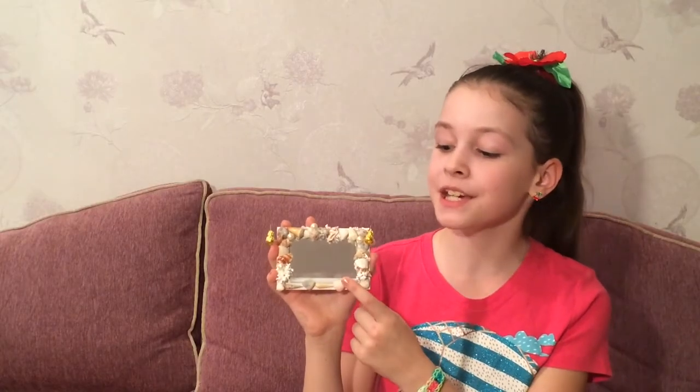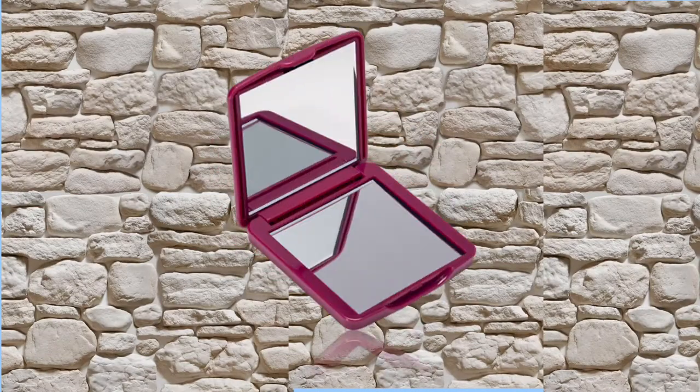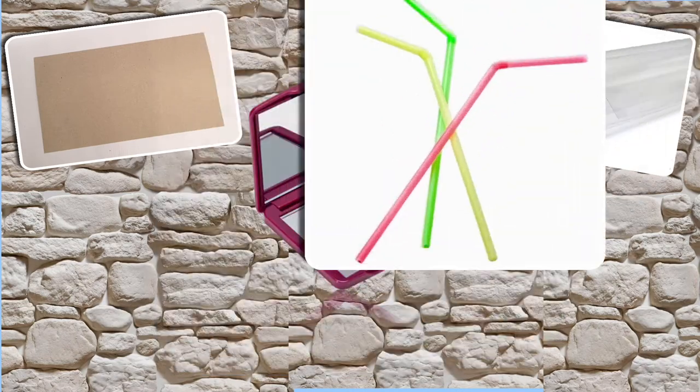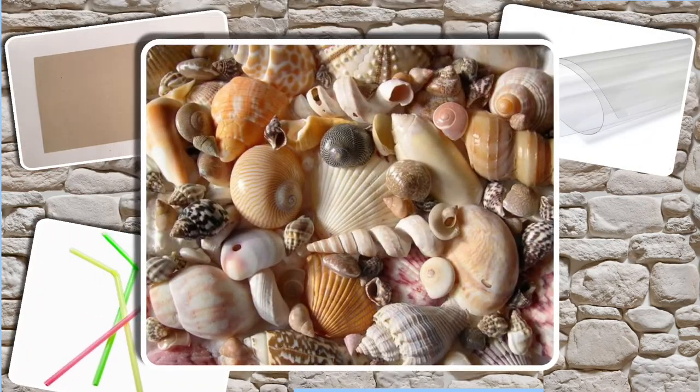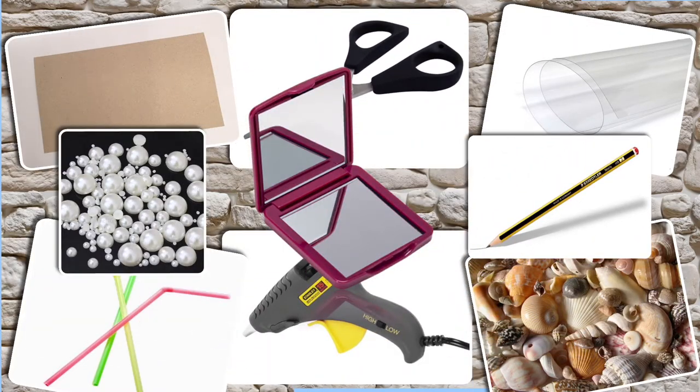It has a shelf and sea style frame, and if you want to make one, let's start. For work we need a mirror, cardboard, plastic straw with equal length as a mirror, seashells, beads, pencil, scissors, and a hot glue.